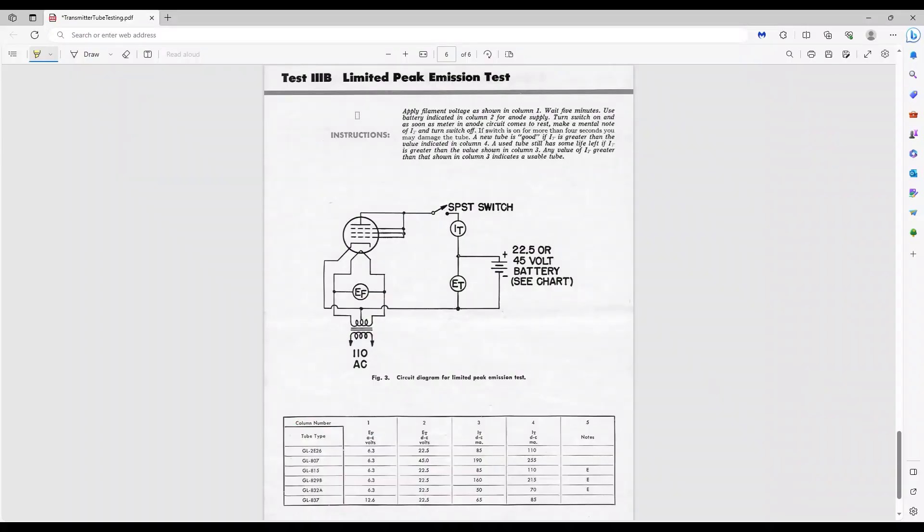The third and final test in this article is called the Limited Peak Emissions Test. And it's quite a bit simpler. Just connect the plate and the two grids together, put 45 volts across them and the cathode, and measure the plate current. For a new tube, the current should be at least 255 milliamps, and for a used tube, 190 milliamps minimum. Now apparently there's one tiny caveat. Do not do this test for more than four seconds. Ideally, get your data in just one second, or else you'll risk damaging the tube. I see what they're doing here. It's essentially converting the tube into a giant diode, which is basically what my Sencore tester does when it checks emission, but certainly not at this level of stress.